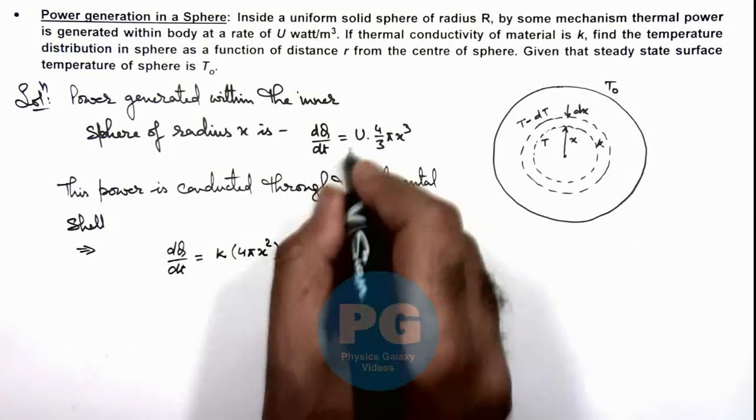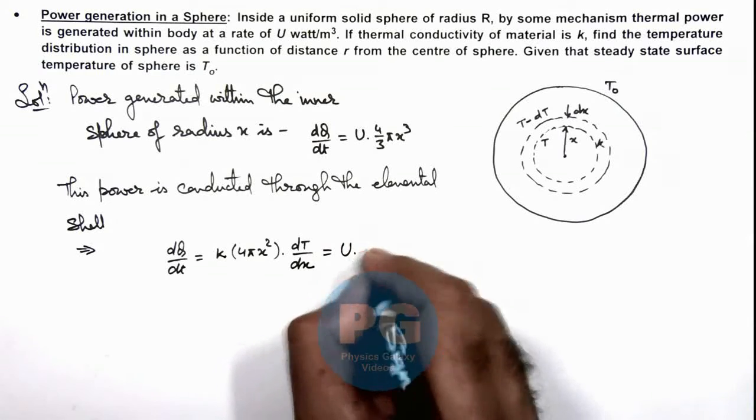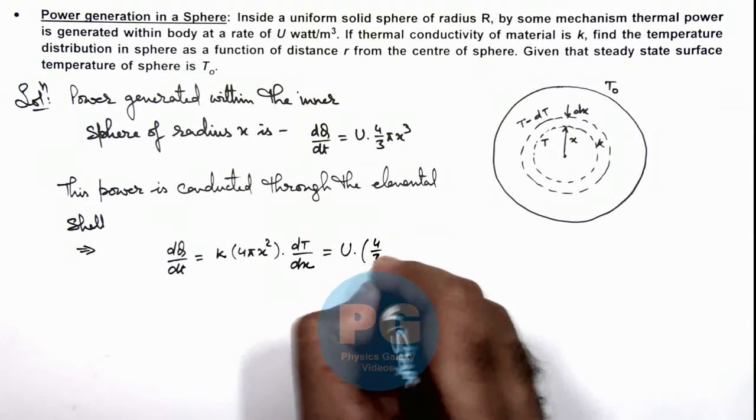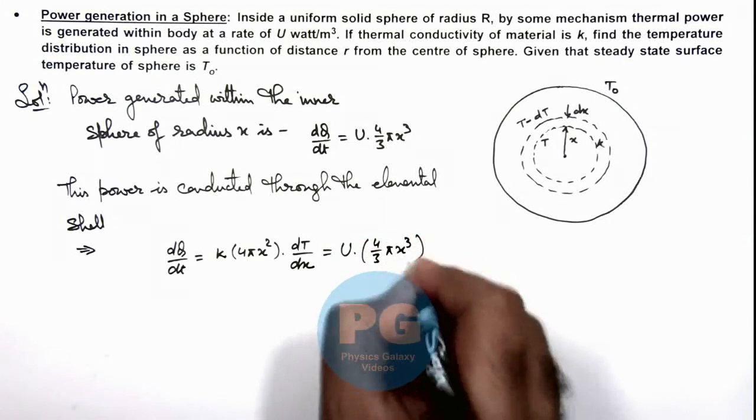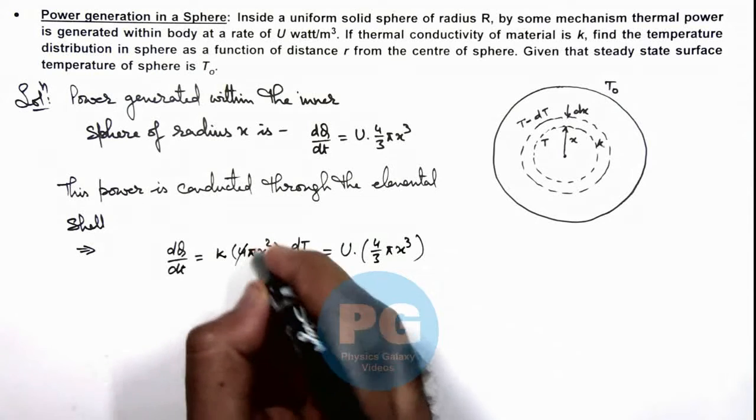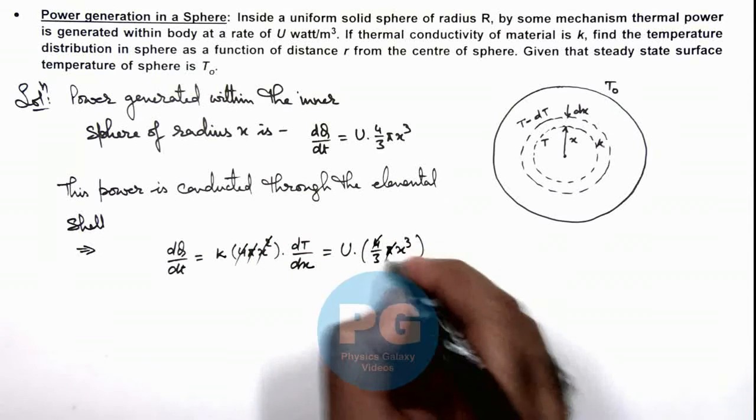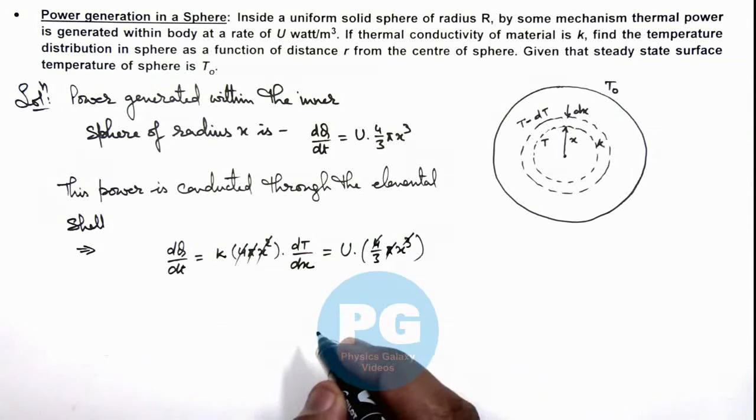And we can equate this value to U multiplied by 4/3 π x³. Here you can see this 4πx² gets cancelled out, and the value we are getting